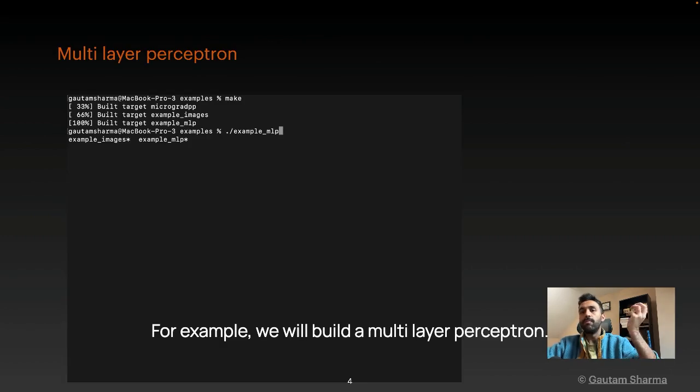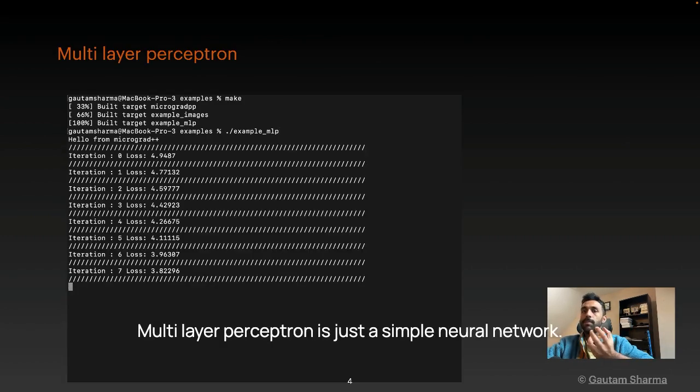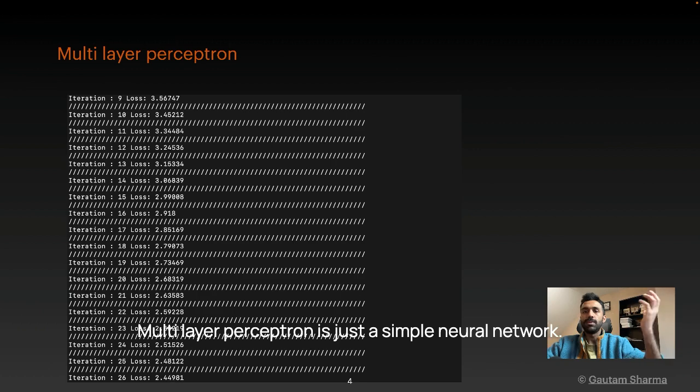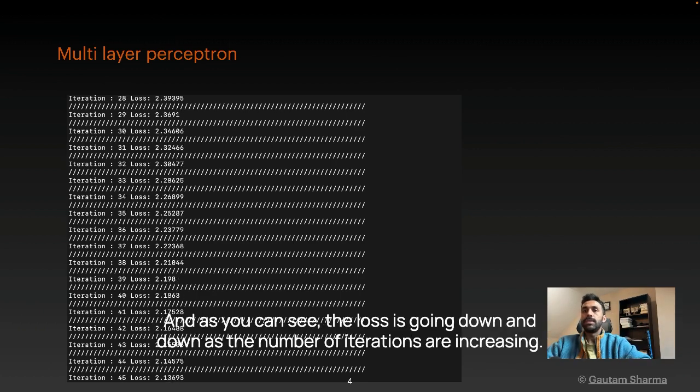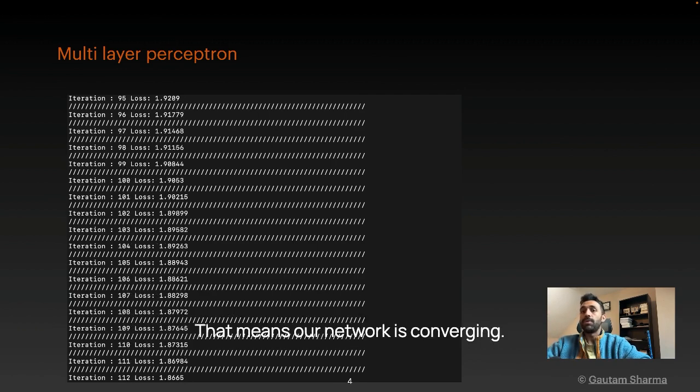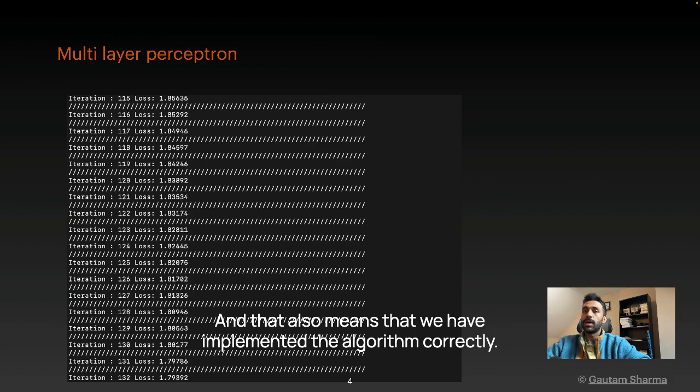For example, we will build a multi-layer perceptron. Multi-layer perceptron is just a simple neural network. And as you can see, the loss is going down and down as the number of iterations are increasing. And that's a good thing. That means our network is converging. And that also means that we have implemented the algorithm correctly.